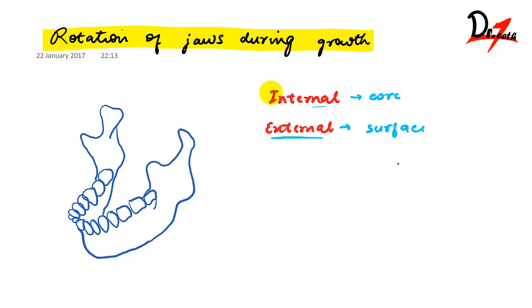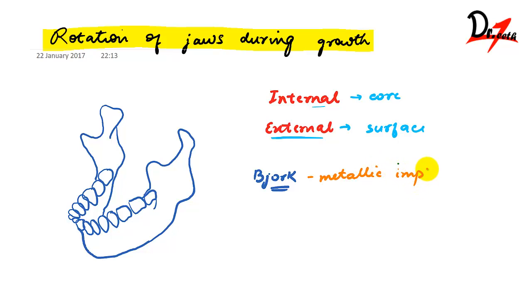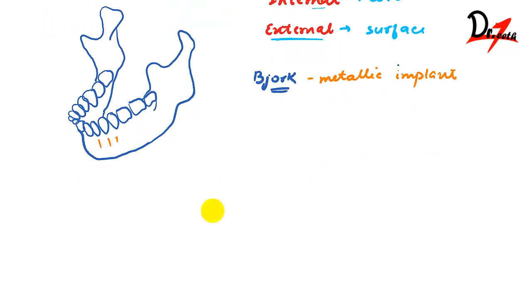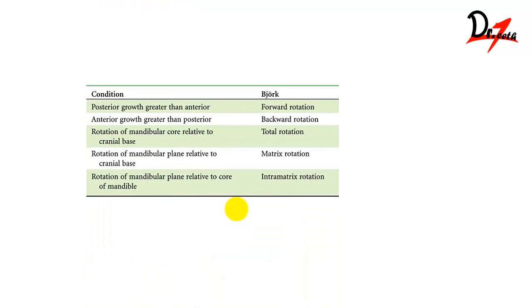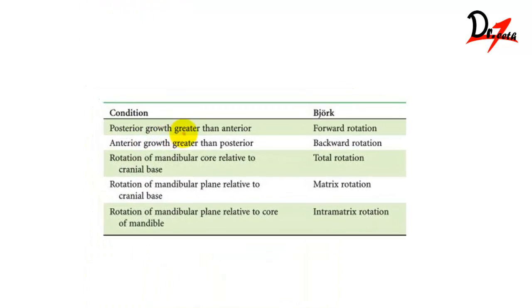So how did we come to know that rotation actually occurs? Björk and co-workers did longitudinal studies of growth using metallic implants. They placed the implants in the bone and studied the changes that occur in the cores of the jaws.